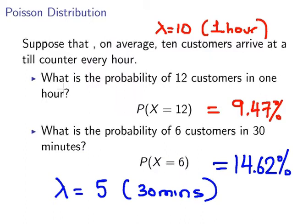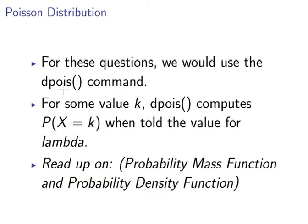So that is using the dpois command. Now just to be clear dpois is for when we are looking for the precise value, the probability of that precise number.